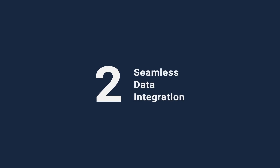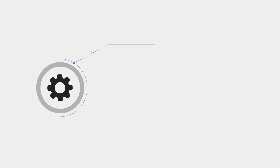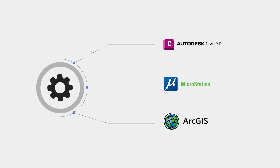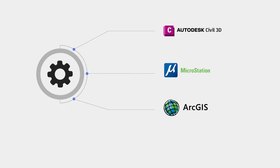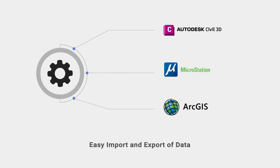Number two: seamless data integration. What good is software if you cannot show the design intent and construction detail in Civil 3D? Our software seamlessly integrates with Civil 3D, as well as MicroStation and ArcGIS. So whatever platform you're using, you don't have to waste time importing or exporting data. Whether it's online mapping, land use data, soil map data, rainfall data, and digital terrain surfaces — it's all there. Just click and go.